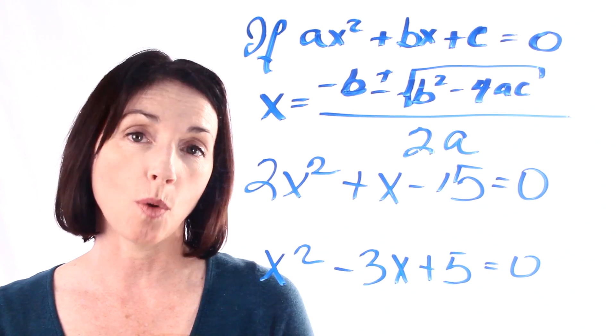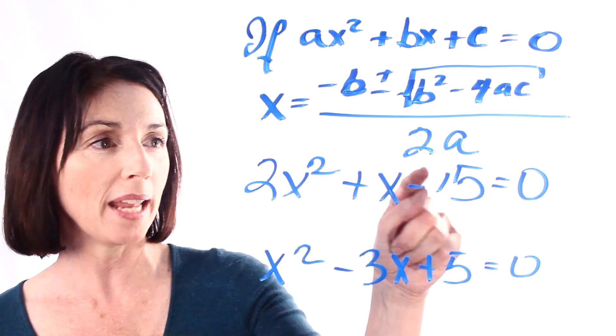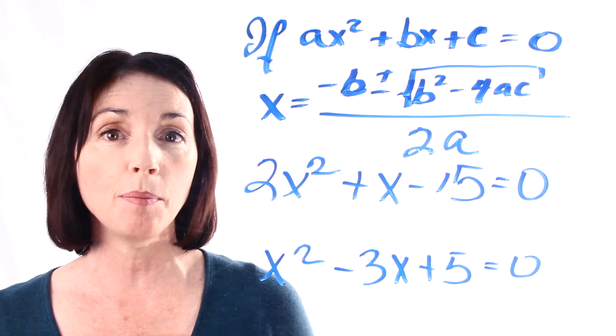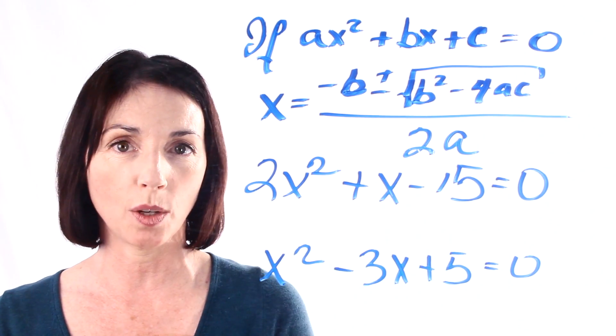Now, the first thing we need is a quadratic equation in the right form, and we have two of them here. So, we're going to identify a, b, and c for each of these quadratic equations.